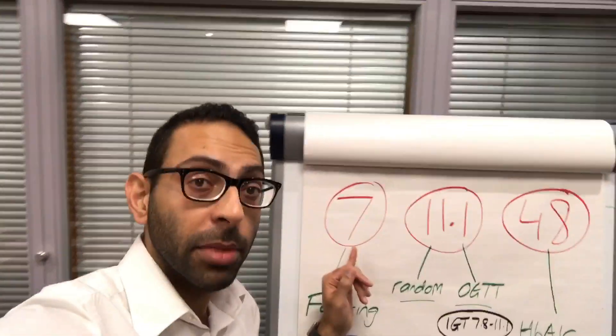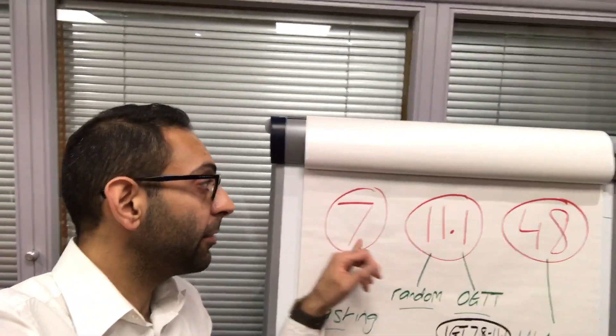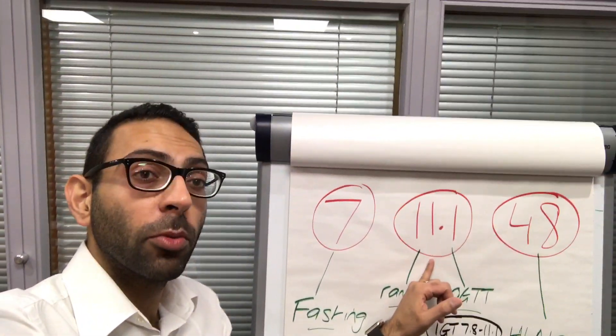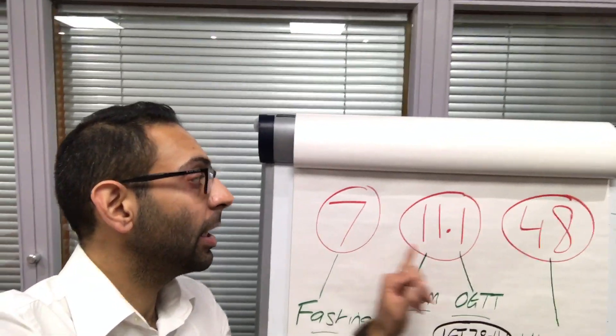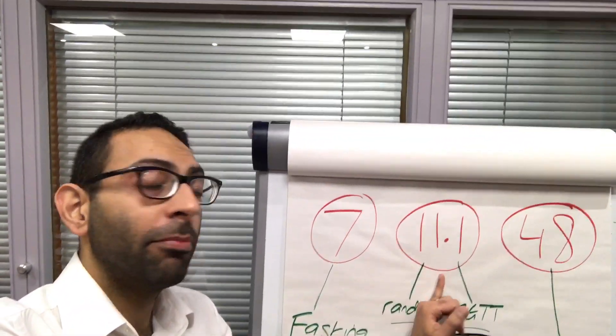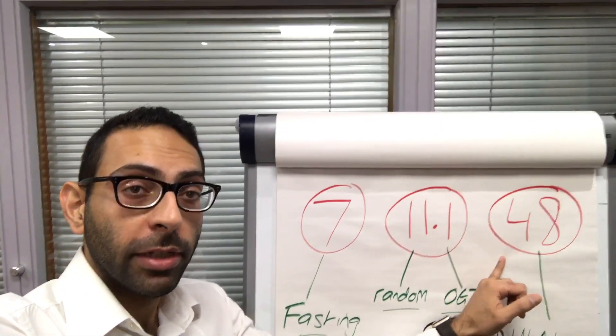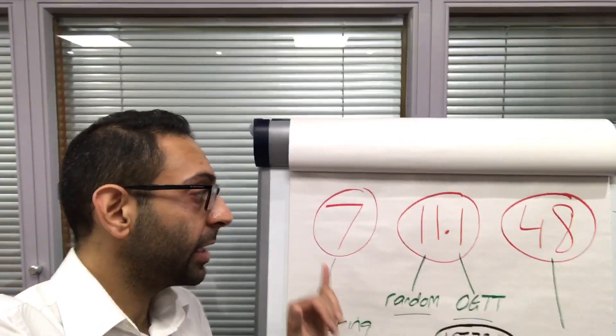Three numbers to remember: 7, 11.1, 48. Remember these numbers — 7, 11.1, 48. What do they represent?